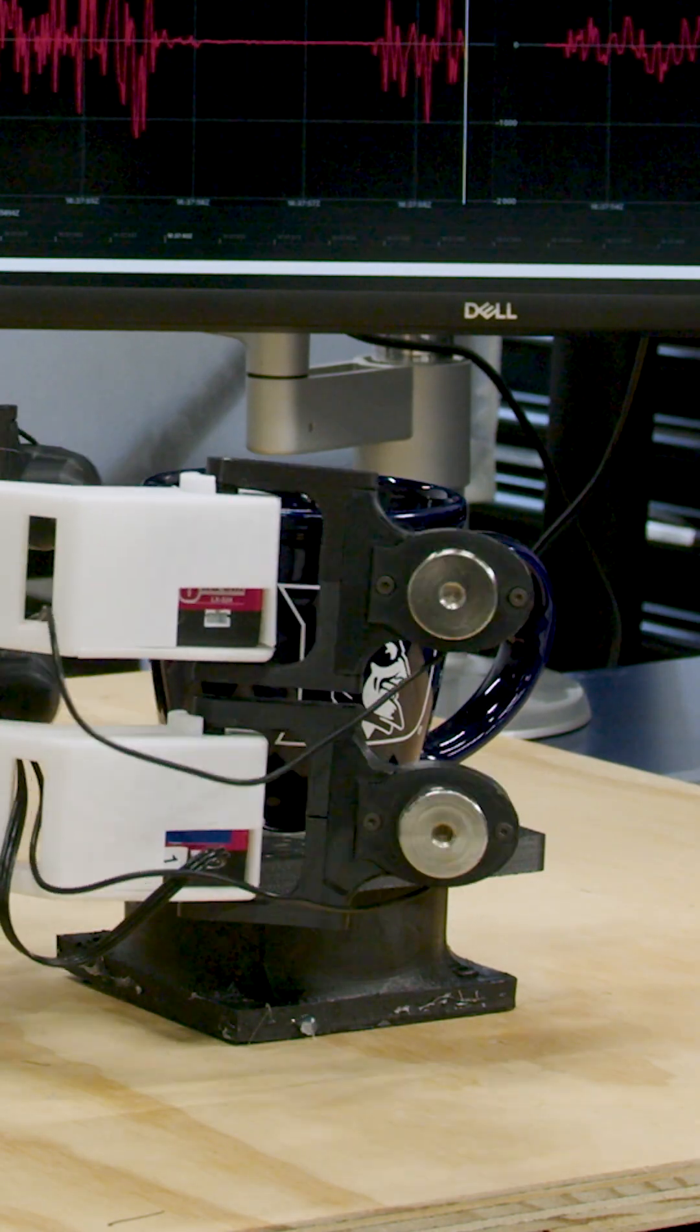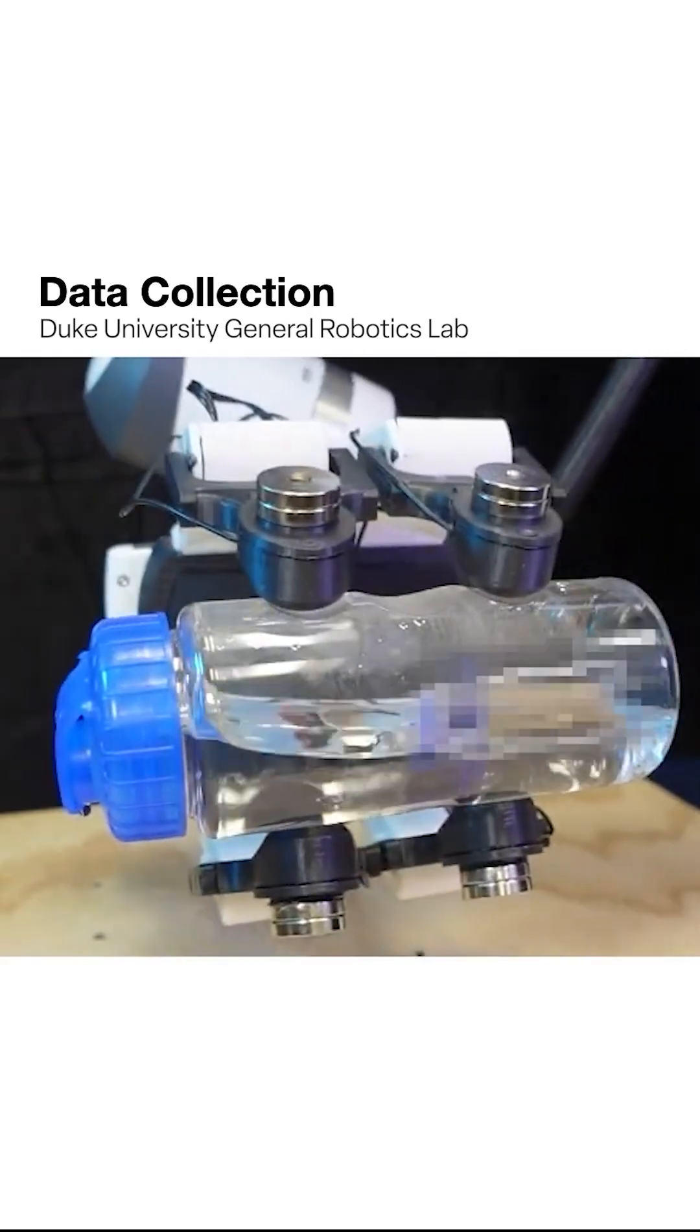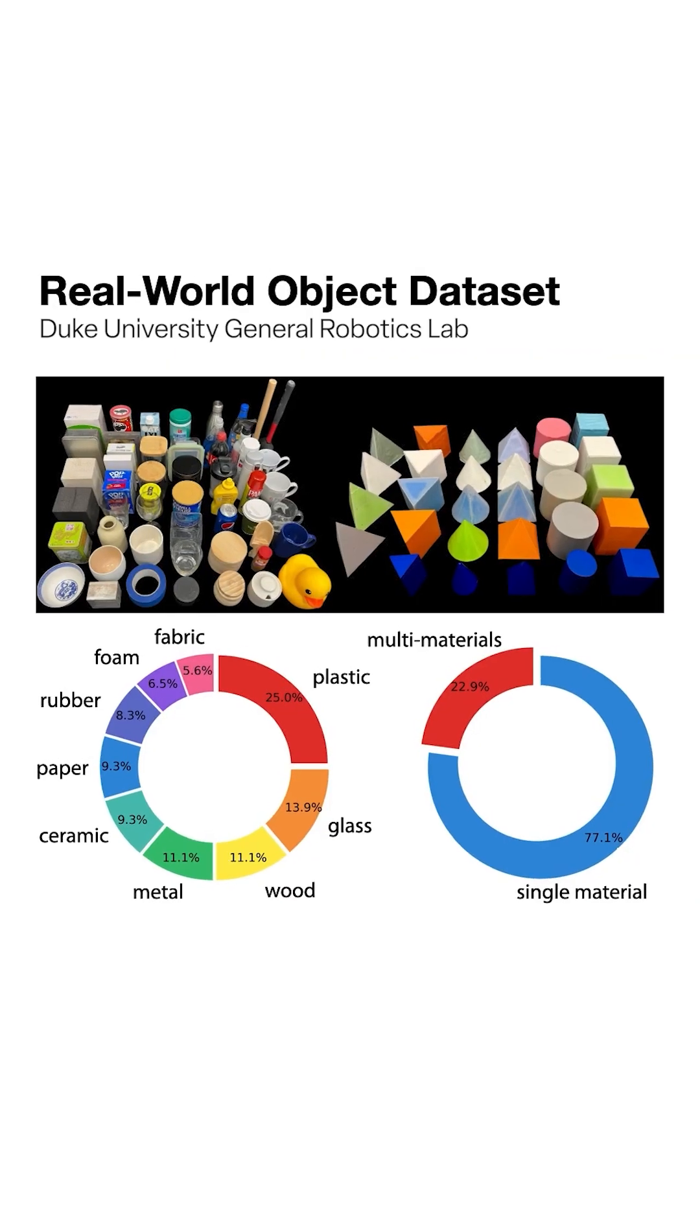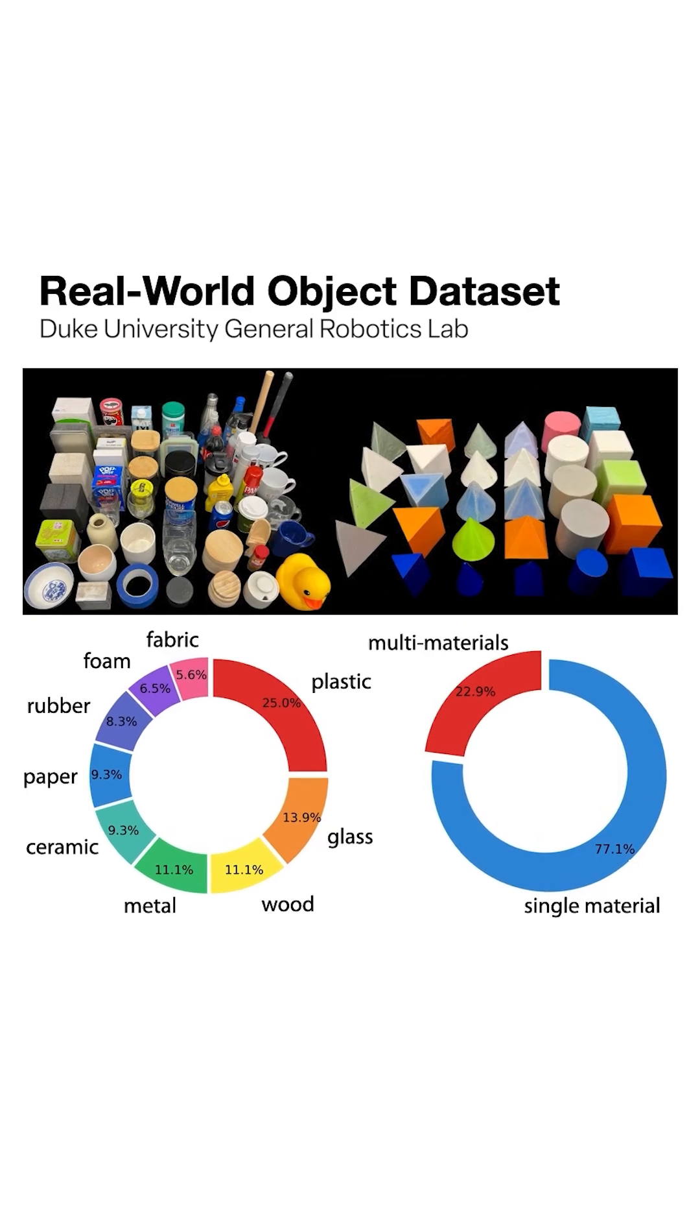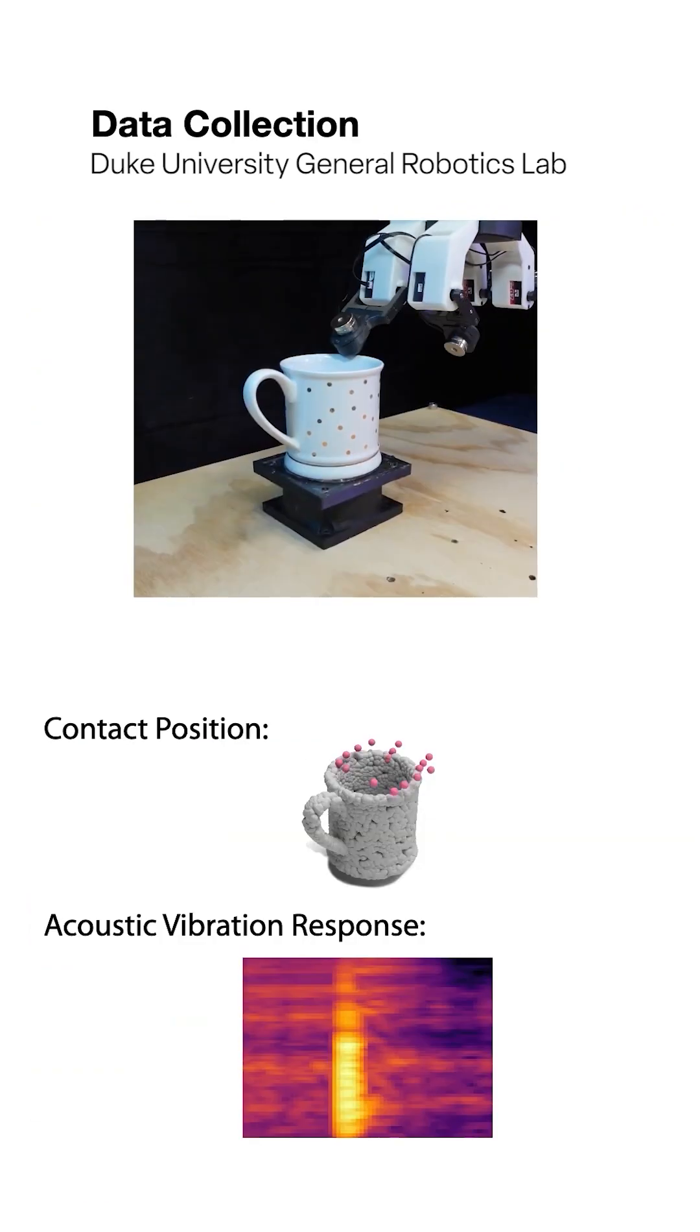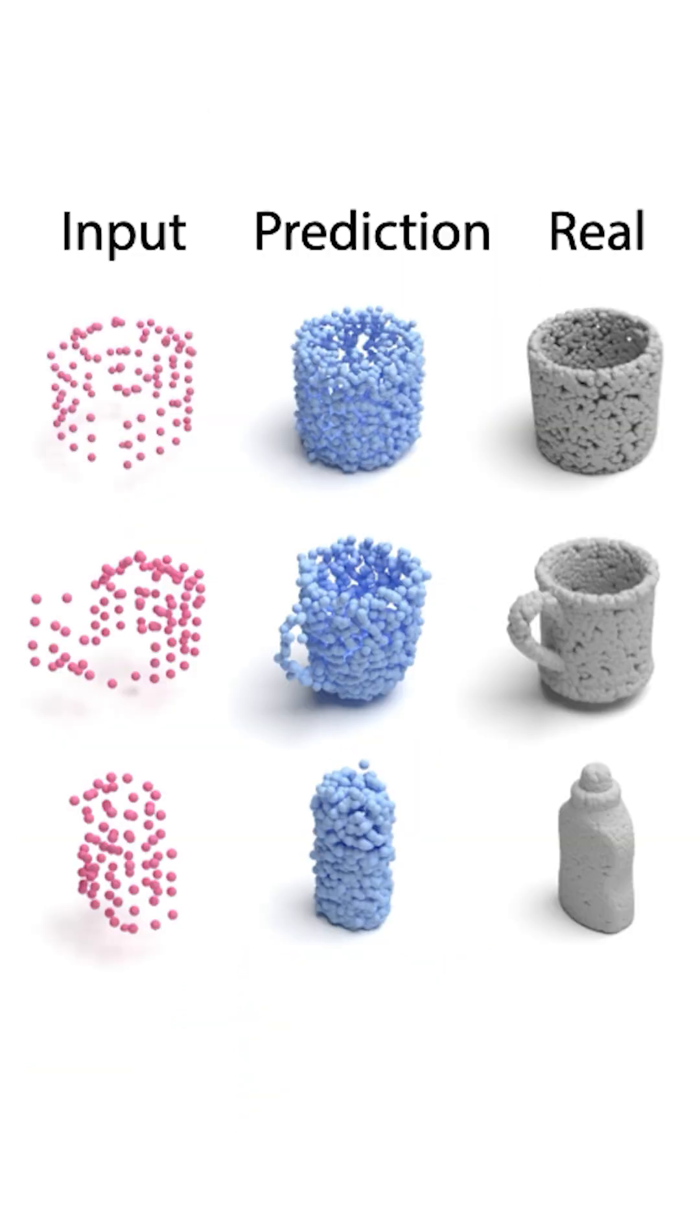SonicSense interacts with objects by tapping around them, or it can shake a container to determine what's inside. 83 objects were used as a data set to train the SonicSense system and were used as an evaluation platform to ensure the system learned on data it has already experienced and could also generalize to novel objects.